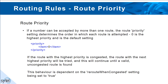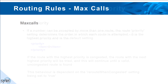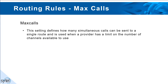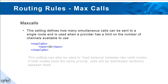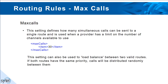This behaviour is dependent on the 'Reroute when congested' setting being set to true. Max calls: this setting allows us to define how many simultaneous calls can be sent to a single route, and is used when a provider has a limit on the number of channels available. This setting can also be used to load balance between two valid routes — if both routes have the same priority, calls will be distributed randomly between them.